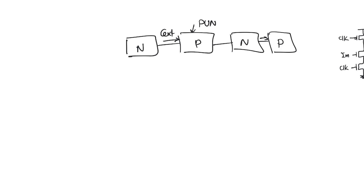Pull-up networks are part of the reason that CMOS is slow, because they consist of PMOS transistors. Due to the inferior mobility of PMOS, this causes us to size the PMOS in the pull-up network to be larger than a corresponding NMOS, which causes us to see more self-loading on the output node, but more importantly, more external loading on the previous stages.